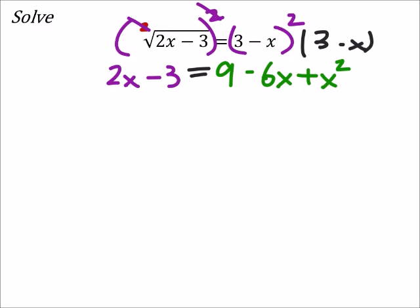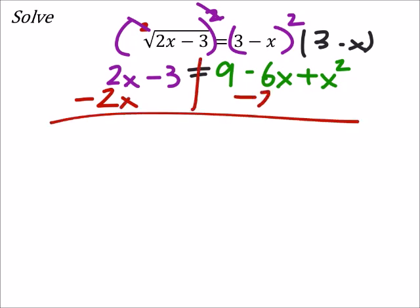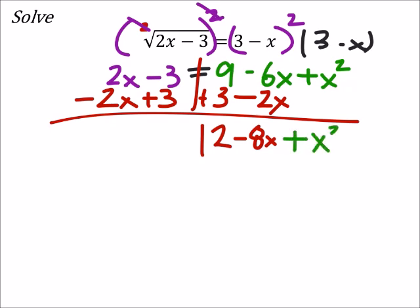So we need to get rid of this 2x. If I subtract 2x from one side, I'll have to subtract it from the other side. Negative 6x minus 2x would be negative 8x. And then we've got minus 3, so I'm going to have to add 3 to both sides, and that would give us 12. This is plus x squared, and that would equal 0 because all this stuff cancelled out.